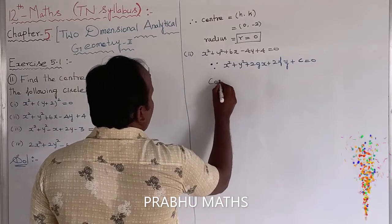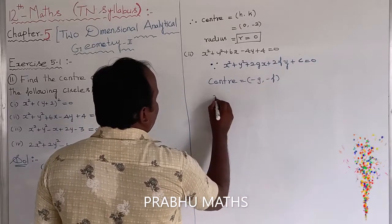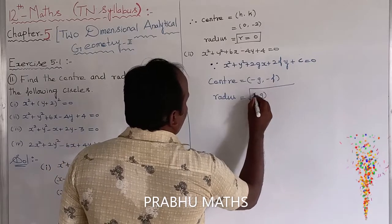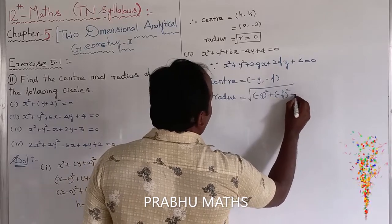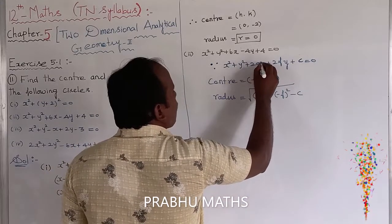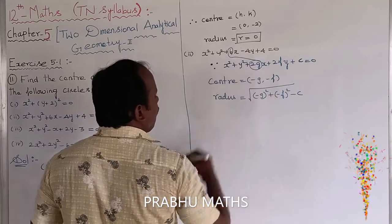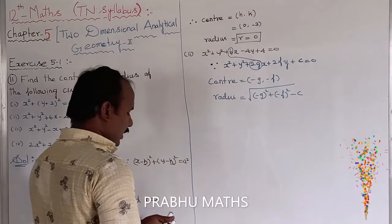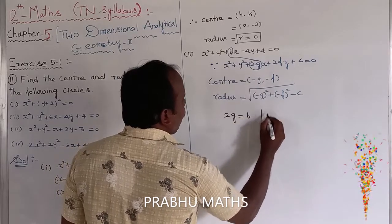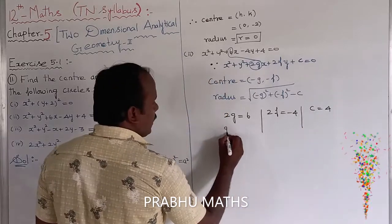The center formula is (minus g, minus f), and radius equals the square root of g² + f² minus c. Comparing the given equation with the standard general equation: the coefficient of x gives 2g = 6, the coefficient of y gives 2f = minus 4, and c = 4. Therefore g = 3, f = minus 2, and c = 4.